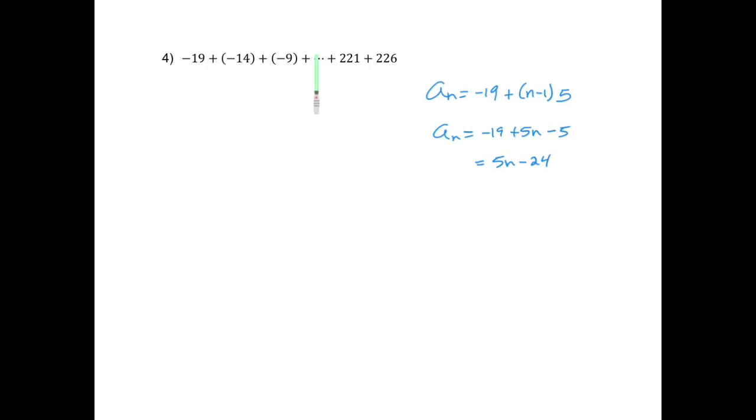But in this case, because I have all those dots, that means that I have a lot of numbers or terms in between those. So I need to find the n value, what position is the 226. So I'm going to substitute on that same equation. So 226 equals 5n minus 24 plus 24. So this is 250 equals 5n. I'm going to divide by 5. So n is 50. So that means that the 226 is on the 50th position of that arithmetic sequence.